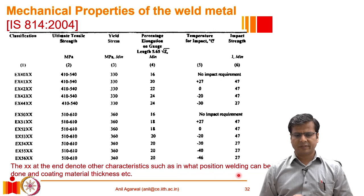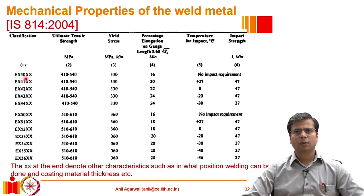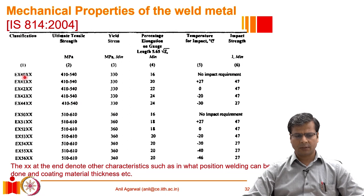For design considerations, we need to understand the material characteristics of filler material used in welded connections. In manual arc welding, electrodes are both the energy source and filler material, classified with symbols such as E-X-40-XX. The number 40 represents the strength and ductility properties of the electrode material. The last two symbols denote other characteristics such as welding position and coating thickness, which are less important from a structural engineering perspective.